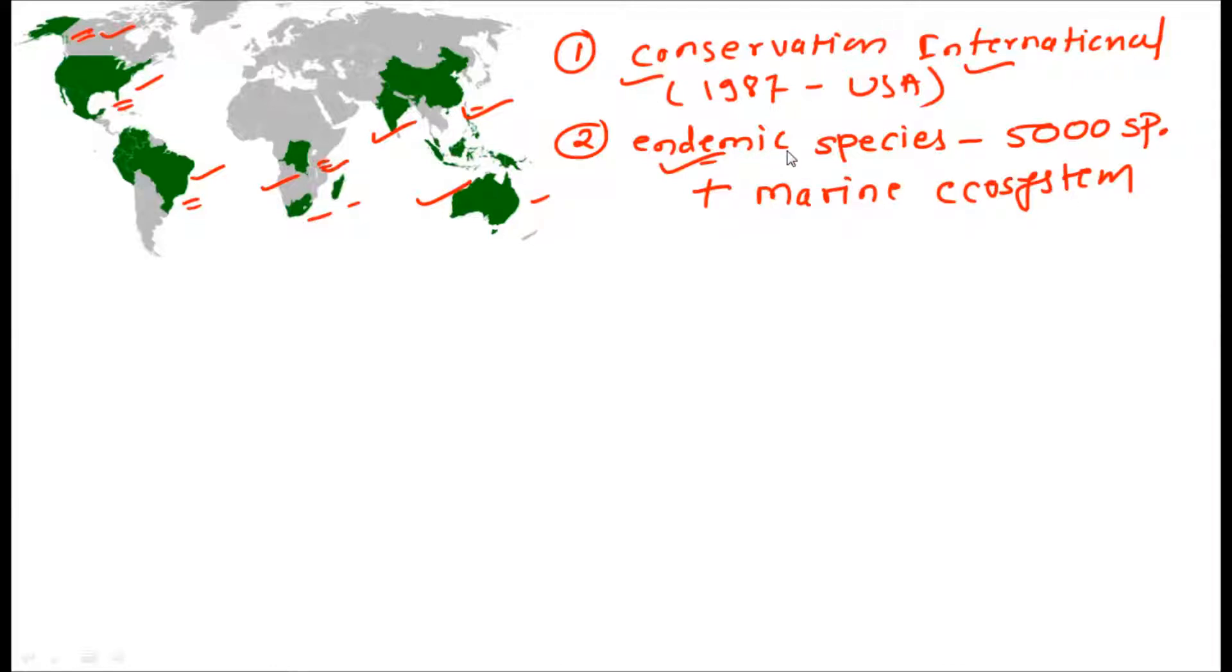That country should have its border with marine ecosystem. Depending upon these two criteria - if the number of endemic species in that country is 5,000 or more, plus if the country has the marine ecosystem at its border - then that country is eligible for the megadiverse country. According to the Conservation International, there are total 17 countries which are the megadiverse countries.